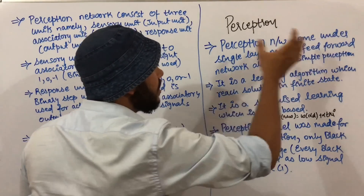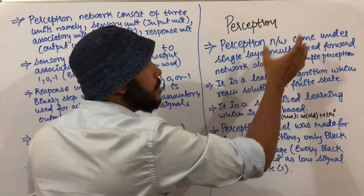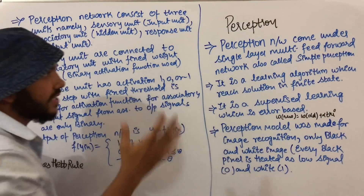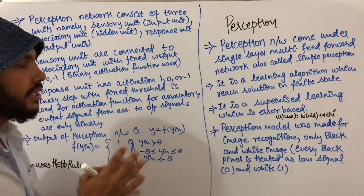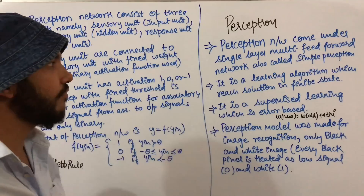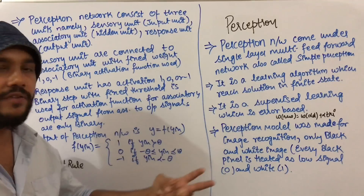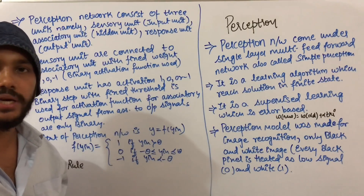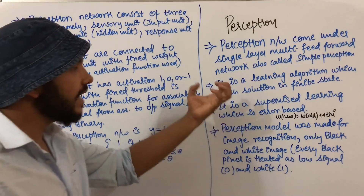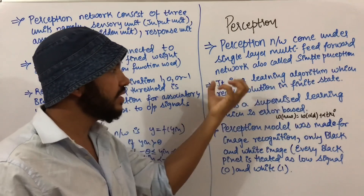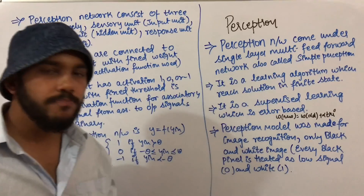The perceptron network comes under a single layer multi feed-forward network, also called a simple perceptron. In a multi feed-forward network we have three layers: the input layer, the hidden layer, and the output layer.